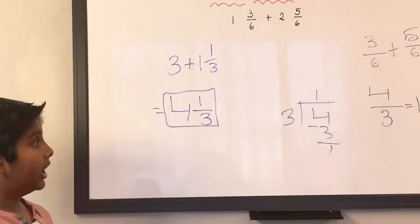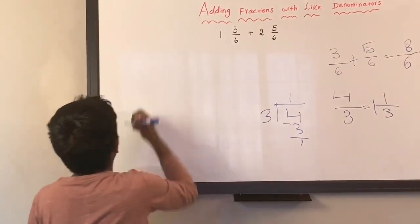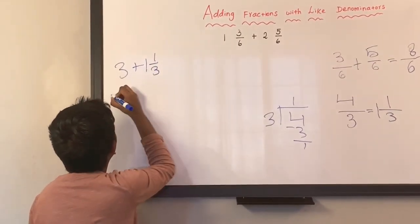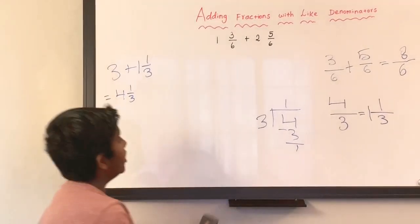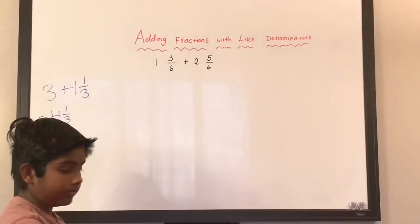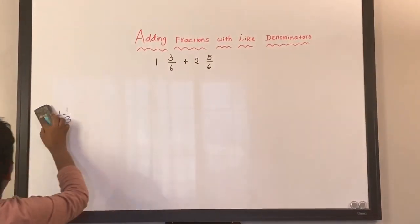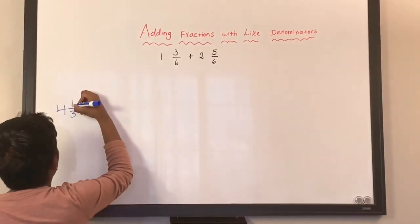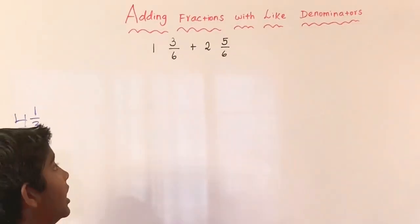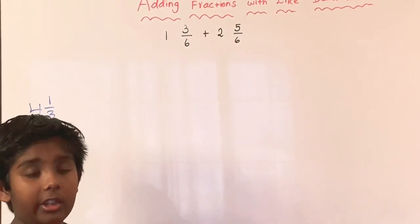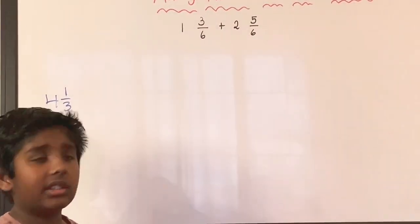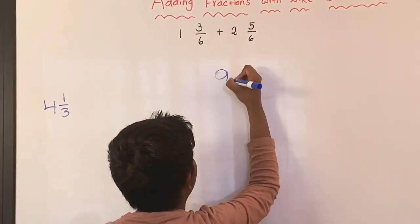Now I'll show you the other way. Let's keep this answer here and see if we get the same answer with the other method. The other way is we can convert both fractions into improper fractions and then convert back into a mixed fraction. So six times one is six, and six plus three is nine — that's nine over six.